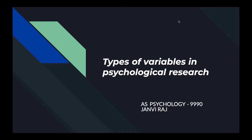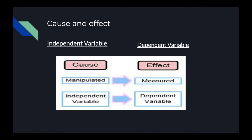Hello guys, I hope you all are well. Today we are going to talk about the types of variables that are present in psychological research. Let's get into that — cause and effect, independent variable, and dependent variable.